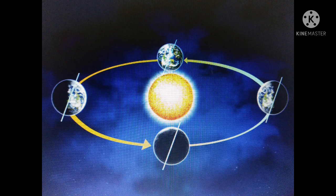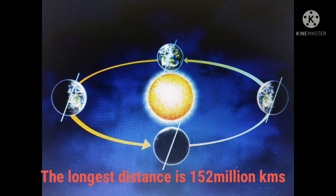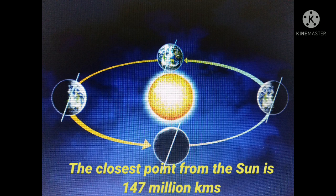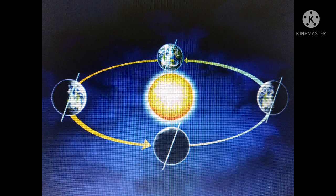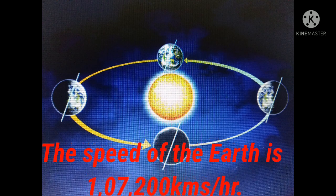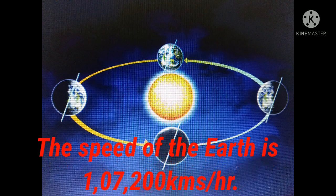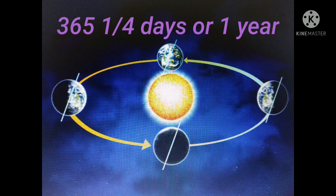An imaginary line connecting the north pole and south pole of the Earth is called the axis. The path the Earth revolves around the Sun is called an orbit. The orbit is circular in shape. While the Earth revolves around the Sun, the longest distance from the Sun is 152 million kilometers, and the closest point is 147 million kilometers. Since the difference between the two points is not so varied, we say the orbit is circular. The Earth revolves at a speed of 1,07,200 kilometers per hour and takes nearly 365 and a quarter days for one revolution, which we call a year.